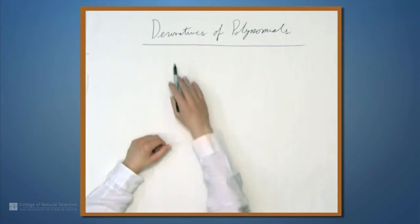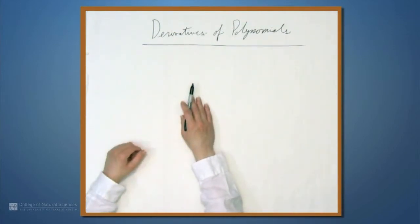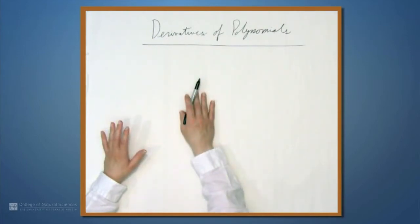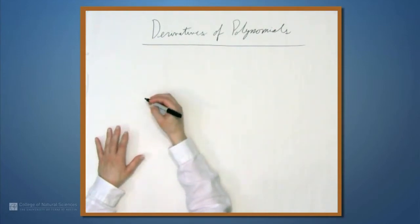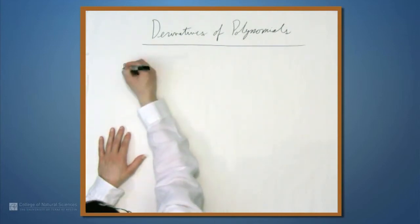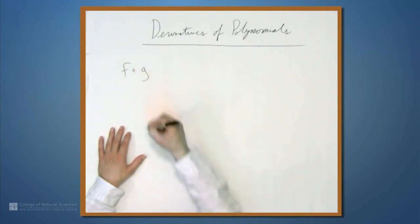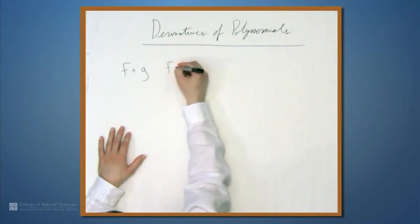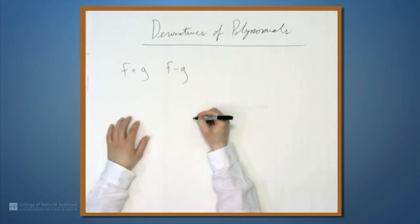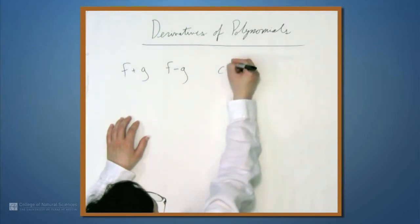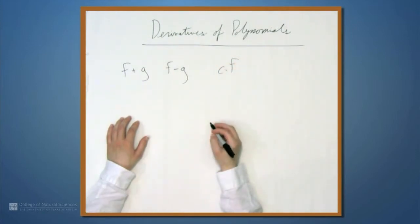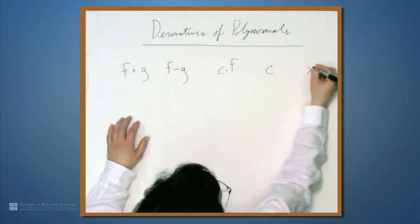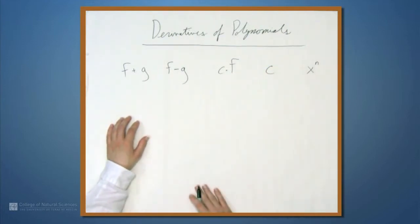We're here at the example table, and in this video we're going to look at the derivatives of polynomials. Polynomials are a great place to start because they involve all the basic differentiation rules. For example, f plus g and f minus g where f and g are both functions, also c times f where c is a constant, c alone, and x to the n.